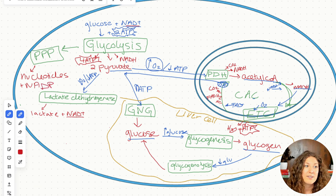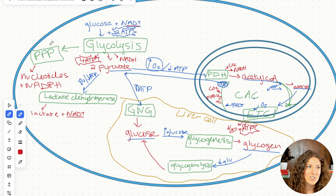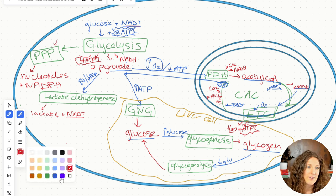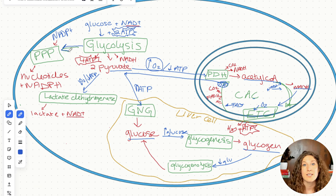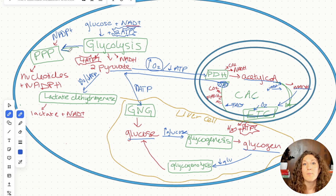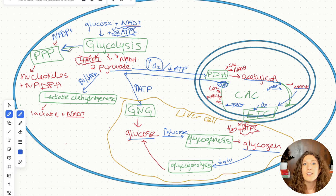The pentose phosphate pathway produces NADPH. NADP+ comes in along with intermediates from glycolysis — there are several points at which it can enter via glycolytic intermediates. Our products are nucleotides or NADPH. That is a low-yield but important pathway, especially when we're talking about lipid metabolism, which we're going to hit shortly.